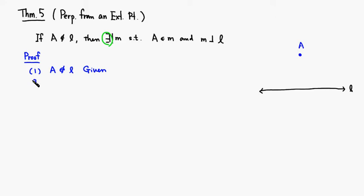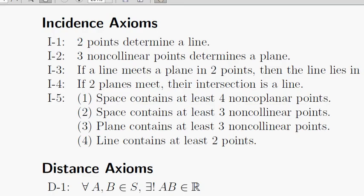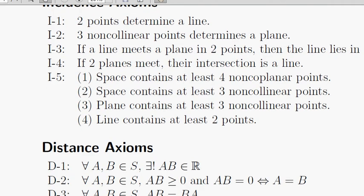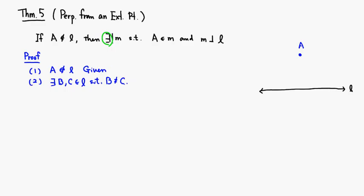Number 2. We know that there are a couple of points, let's say B and C on the line L such that they're distinct. So B and C are not the same point. We can quote the axiom, incidence axiom I5 part 4. This is by I5 part 4.